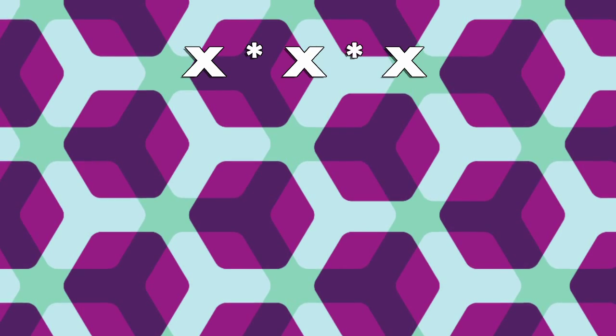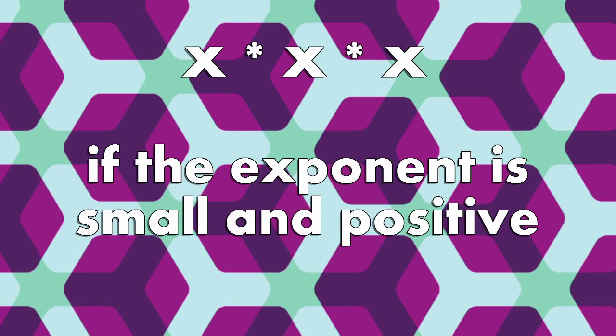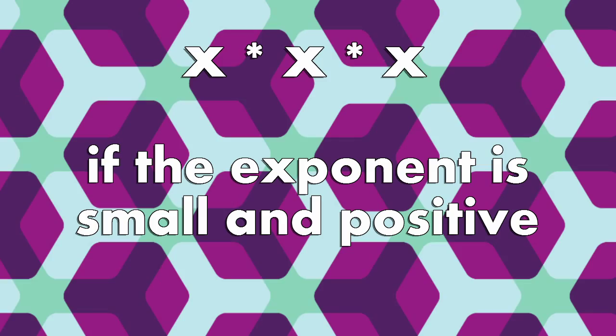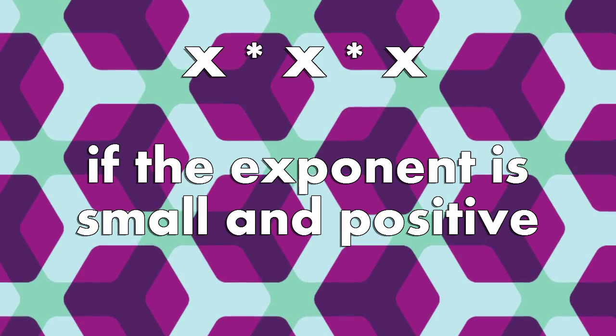But what if we want to use exponents, like calculating x cubed? An easy way is to just write x times x times x, which works if the exponent is a small positive integer. Otherwise, you can use something called the pow method from the Math library. We'll talk about this later.